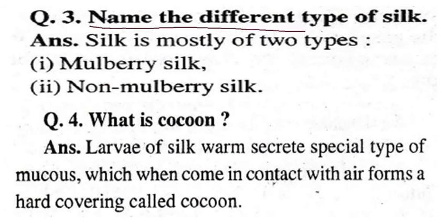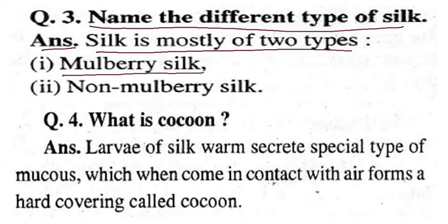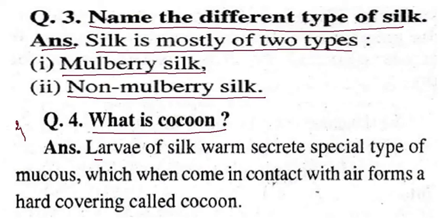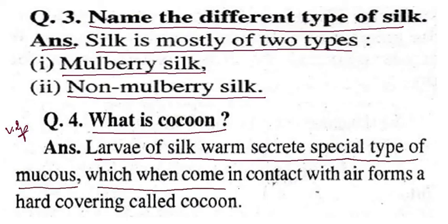Name the different types of silk. Silk is mostly of two types: first is mulberry silk, and second is non-mulberry silk. What is a cocoon? The larva of silkworms secretes a special type of mucus, which when comes in contact with air, forms a hard covering called a cocoon.